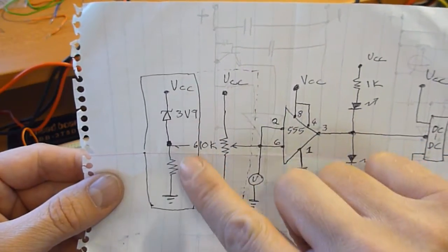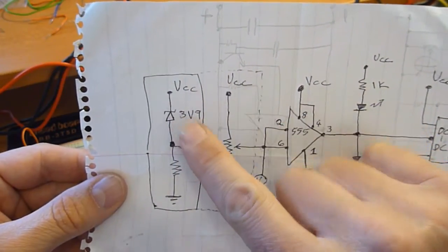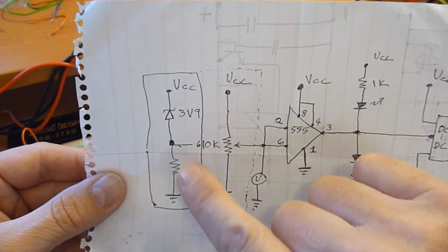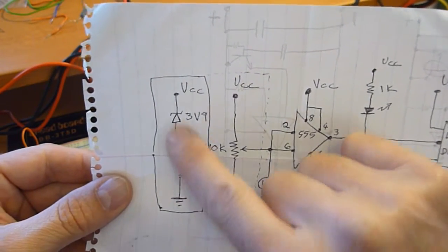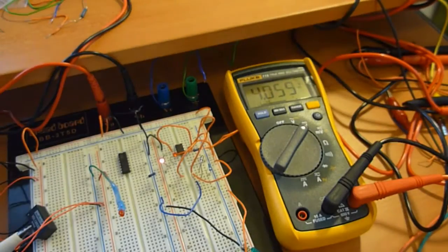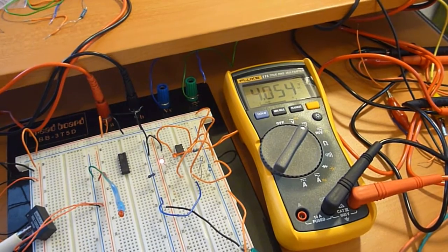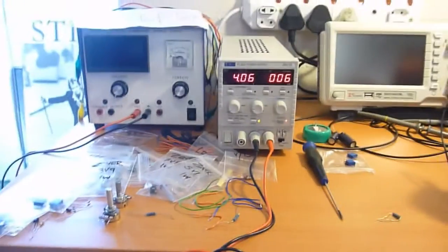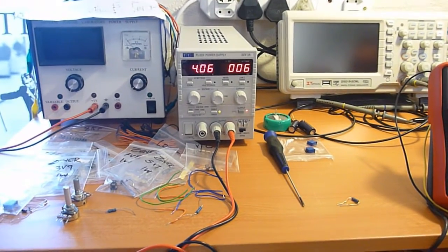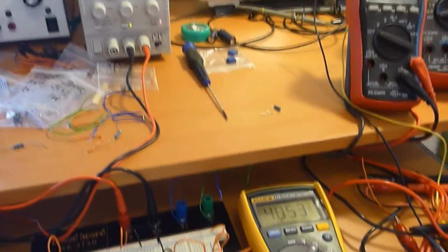Obviously the values, where it triggers and what have you, can be changed by changing the Zener or changing the resistance here. But anyway, let me just demonstrate it. What I've got, I've got my variable power supply hooked up, where I'm going to vary the voltage coming in.